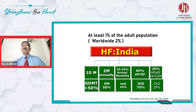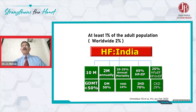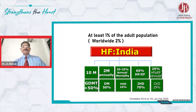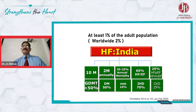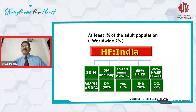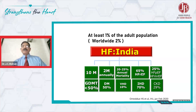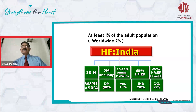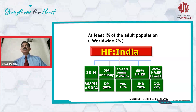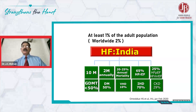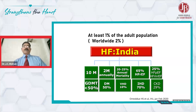Ischemic heart disease accounts for 70 percent of all heart failure in this country. Valvular heart disease accounts for 10 percent, because rheumatic heart disease is still quite prevalent, and degenerative valvular heart disease is slowly increasing as people are living longer and getting older.